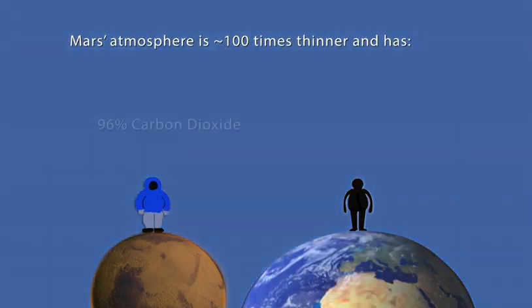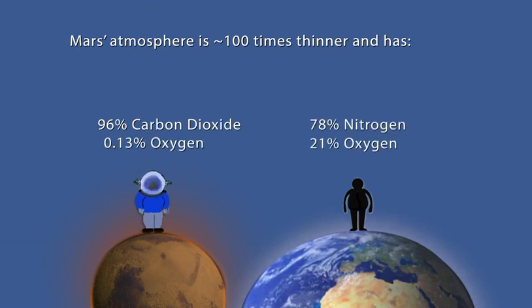Humans could not survive breathing in the Martian atmosphere because it is 96% carbon dioxide. Earth's atmosphere is 78% nitrogen and 21% oxygen.